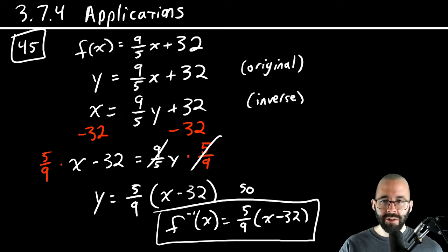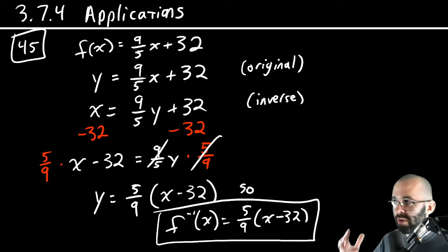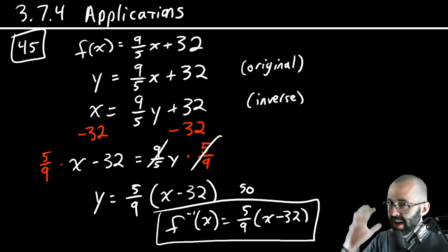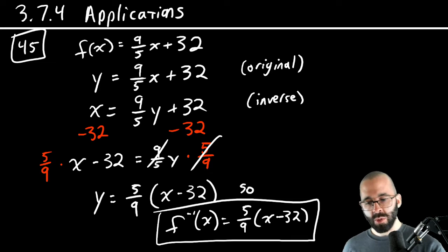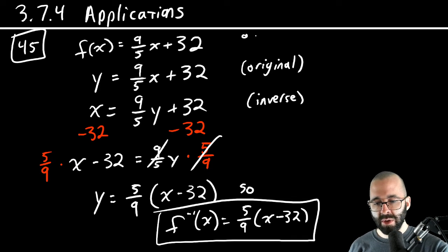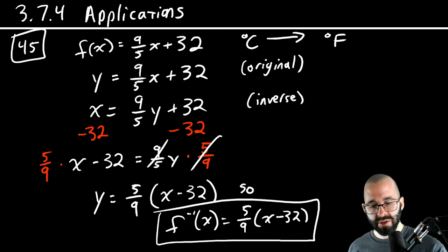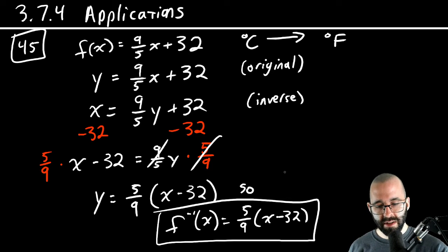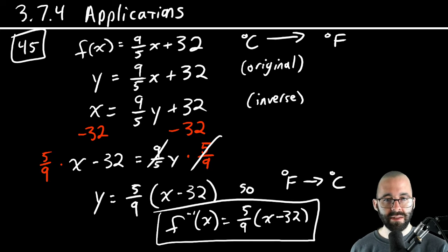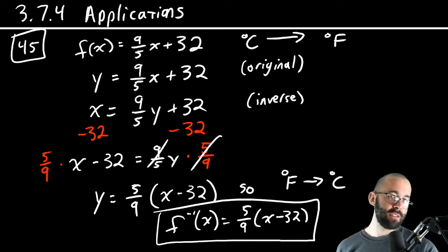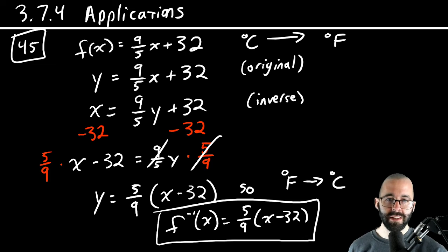The whole idea about inverse functions is undoing, going from y to x instead of x to y. So if this original function takes degrees Celsius and brings it to degrees Fahrenheit, our inverse function does the opposite. Takes degrees Fahrenheit to degrees Celsius. And you have probably seen this formula before as well.